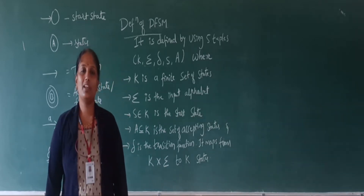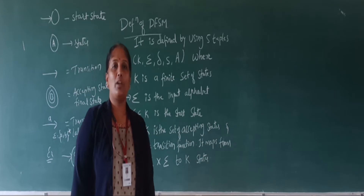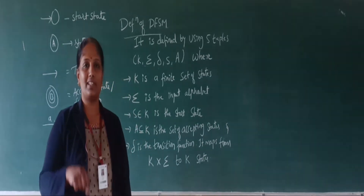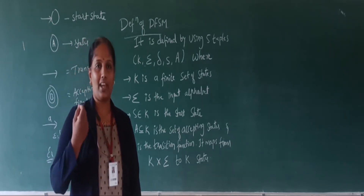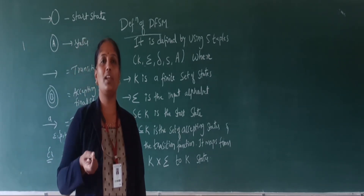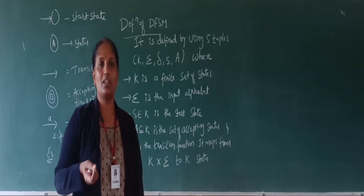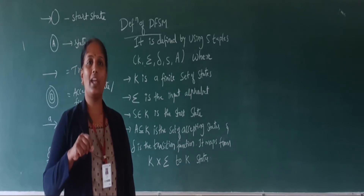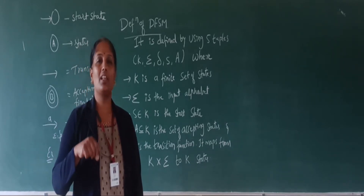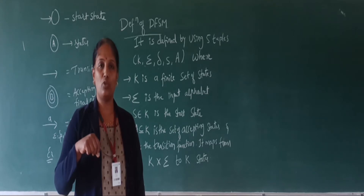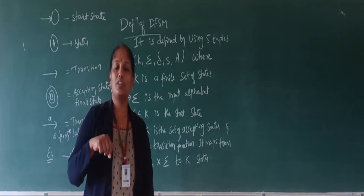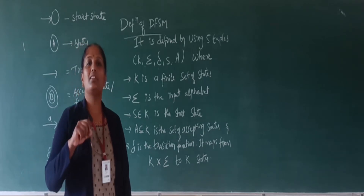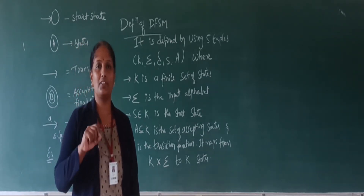The machine takes a string character one by one, left to right, one single character at a time. It checks its present state and the character read. Based on that, it moves to the next state. If the machine reads all the input and reaches the accepting state, it produces accept as the output. If the input is read and the machine is still in an intermediate state, then the machine states that the string is rejected.